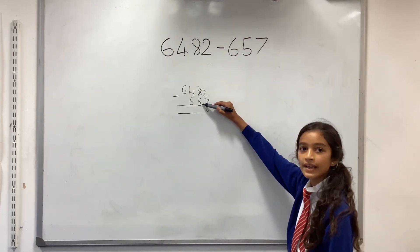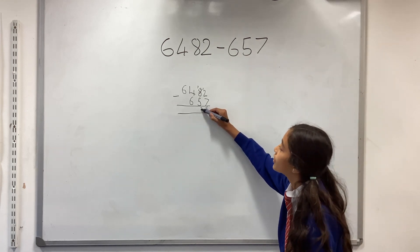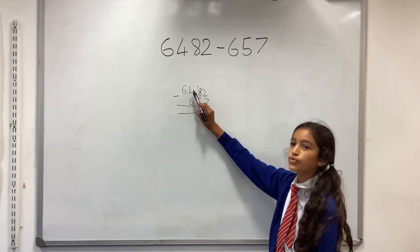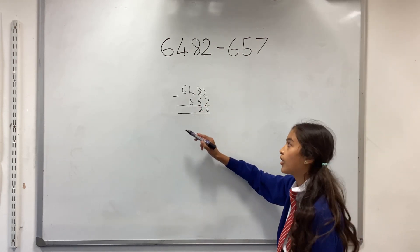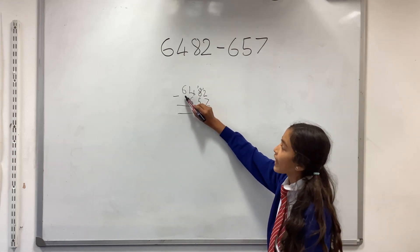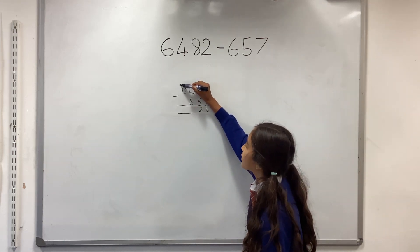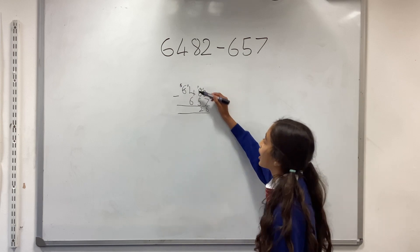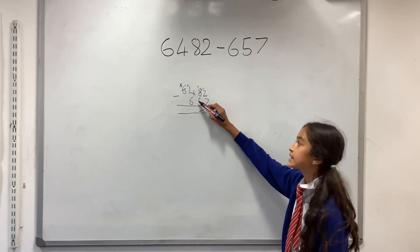And then you do four take away six, but you can't do that, so you go to the thousands column. That becomes a five, you exchange one, so it's 14 take away six, which equals eight.